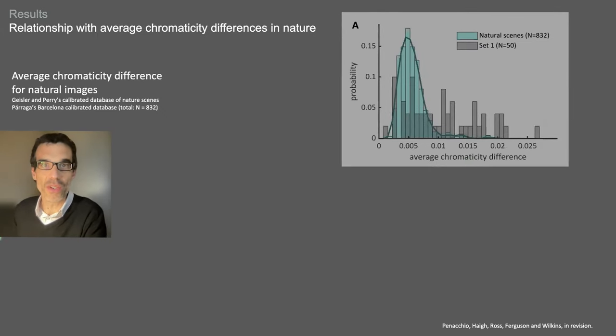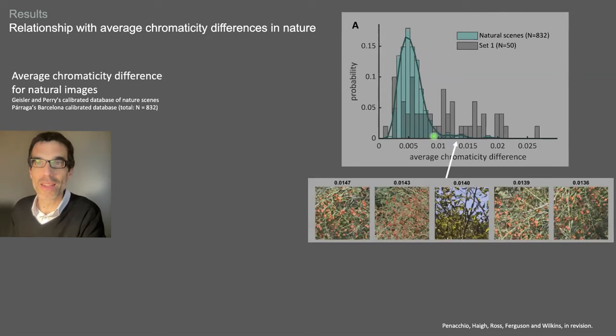So we have an association between chromaticity difference and visual discomfort, but the question is whether this relationship can be framed in terms of the statistics of natural scenes, as it is the case for luminance. To answer this question, we computed the average chromaticity difference for two sets of calibrated natural images. We found that 97% of the distribution, so the distribution here for natural images is represented in green, 97% of the distribution were below a value of the metric of 0.01, a value not associated with visual discomfort in our experiment. We also found that distance to the distribution was a good predictor of visual discomfort.